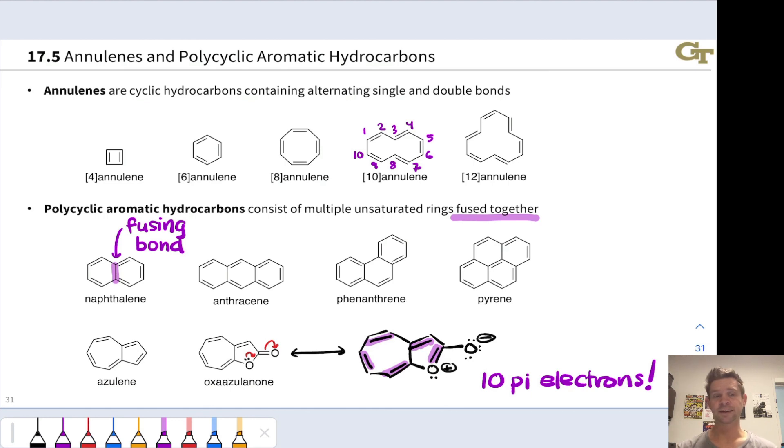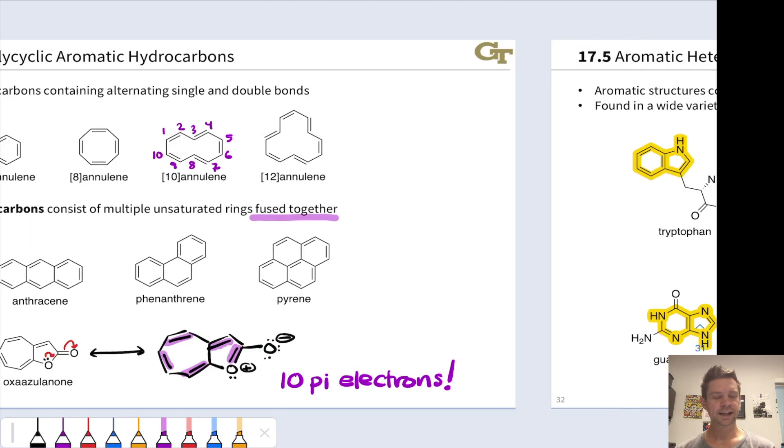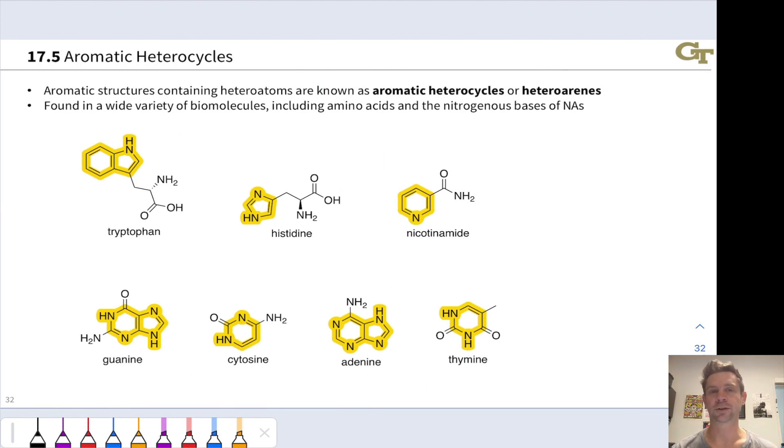On this slide, we looked at annulenes and polycyclic aromatic hydrocarbons. Recognition that this oxygen is participating in the aromaticity of this molecule is a nice segue into aromatic heterocycles. Hugely, hugely important, found in a wide variety of compounds, for example, in biochemistry.